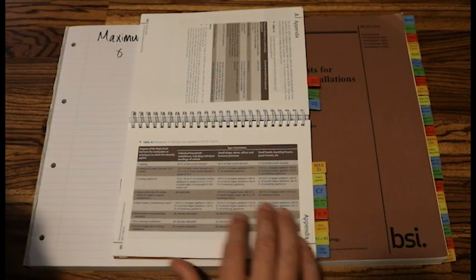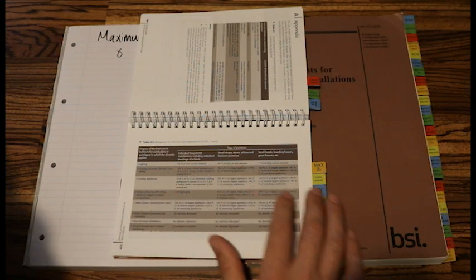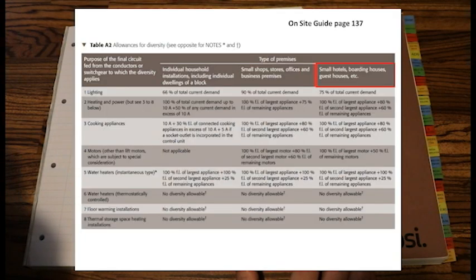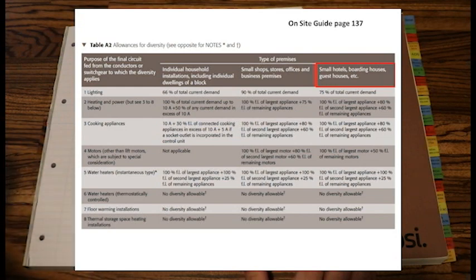Let's have a look at this. If we look at the headings across the top, column 4, the type of premises says small guest houses, boarding houses, small hotels, etc. Our question was a small guest house, so the demand that we'll be using or maximum demand and diversity will be in that final column. Any diversity that we can apply, we've got to look in that last column.